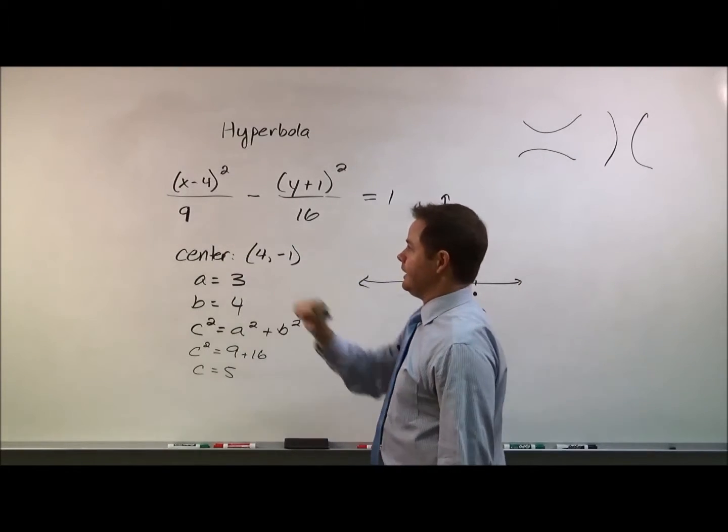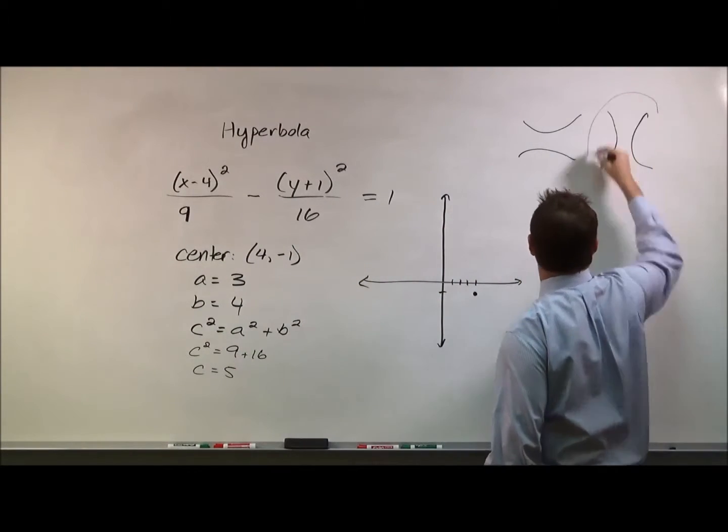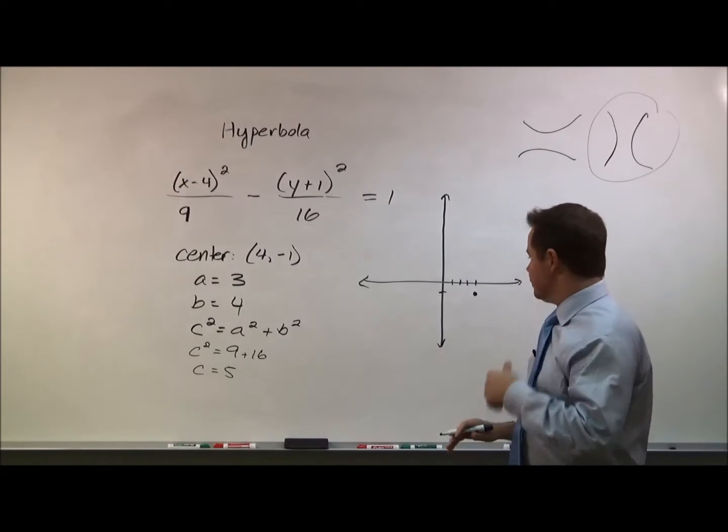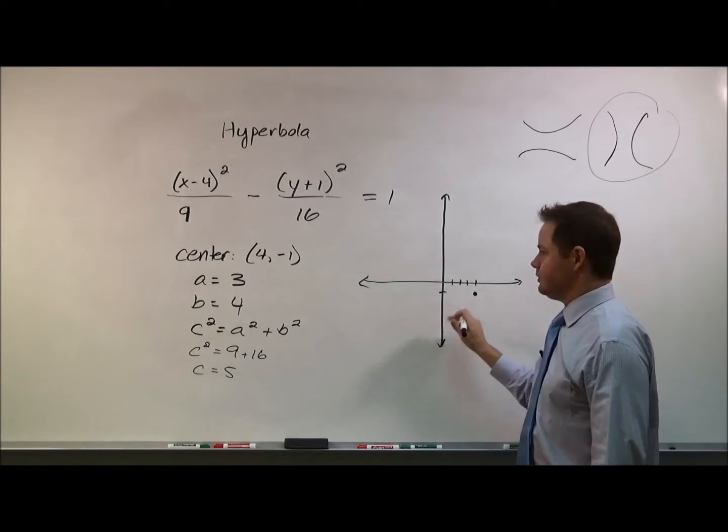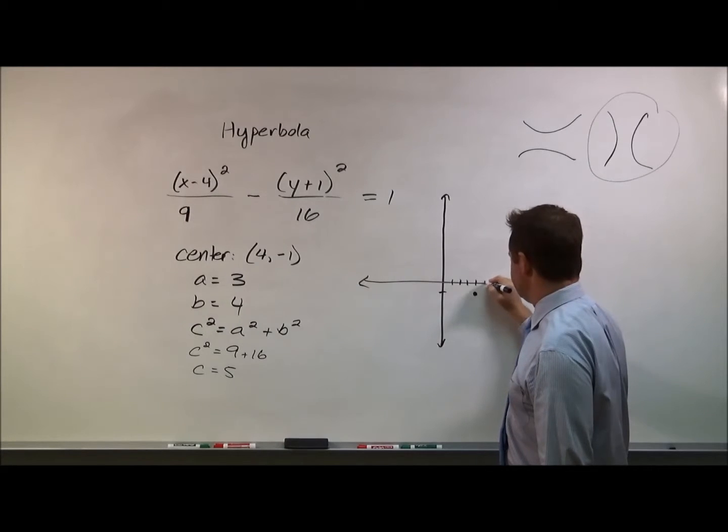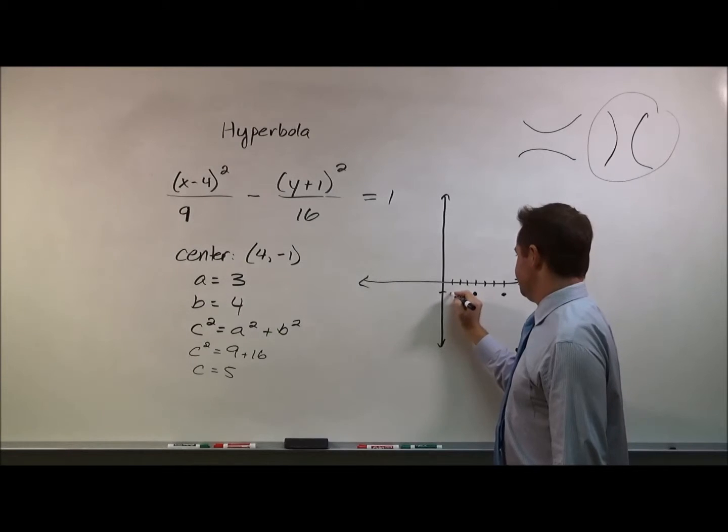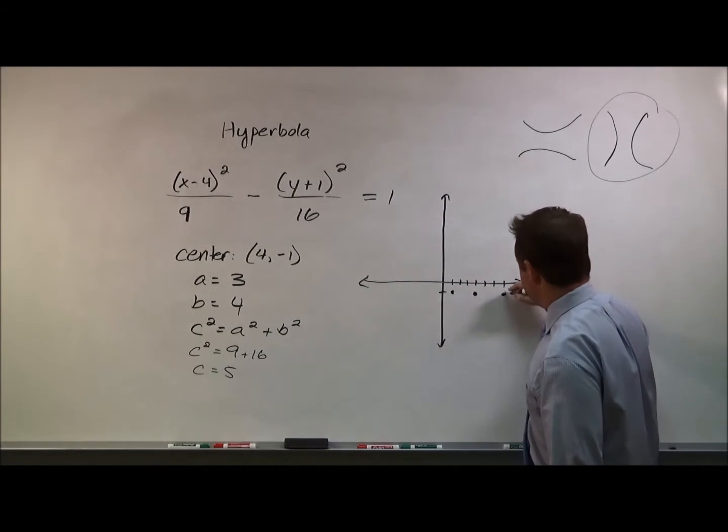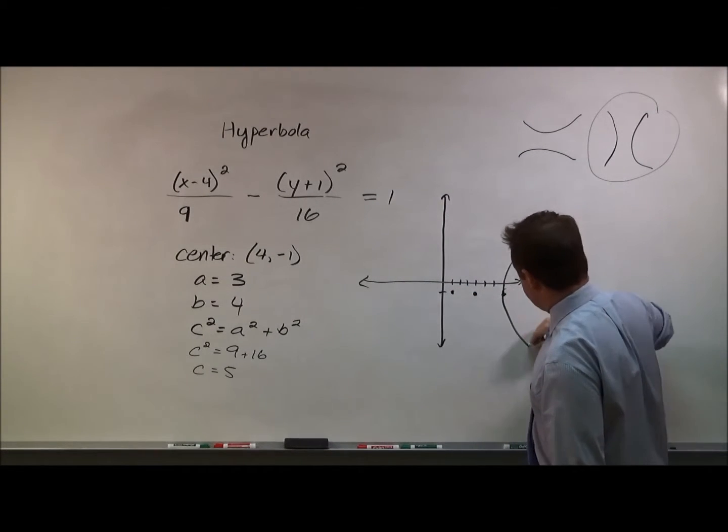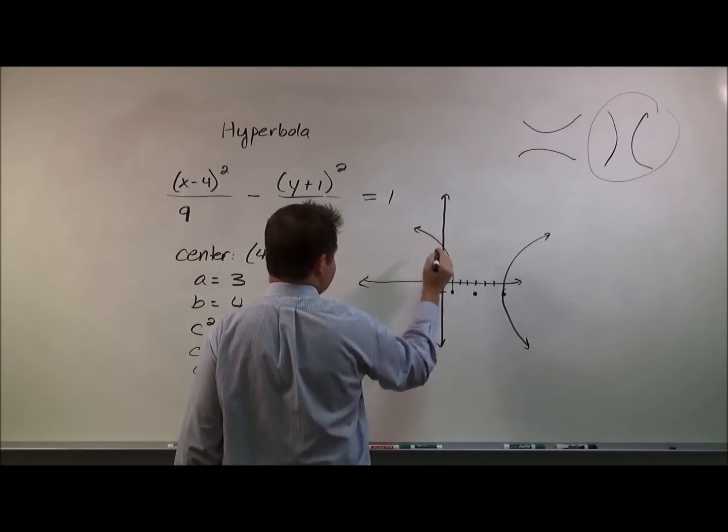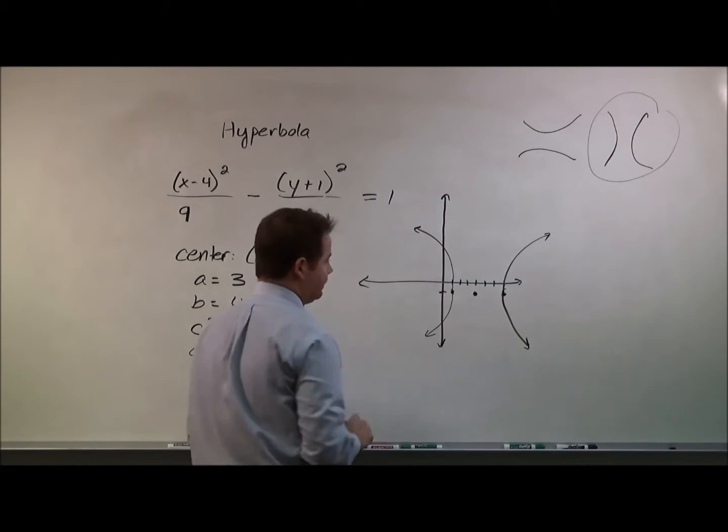In this case, when you have the x value first, your hyperbola is going to have this shape to it. And so when we go to graph here, we're going to start from the center. And since a is three, that means to find each vertex, we're going to count three units to the right and three units to the left.